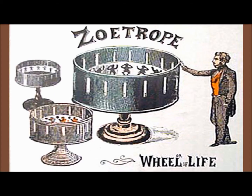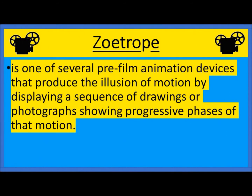Next we began to speak about early film history and went over the inventions and innovators. One of the inventions was the zoetrope, also known as the wheel of life. This is one of several pre-film animation devices that produced the illusion of motion by displaying a sequence of drawings or photographs showing progressive phases of that motion.